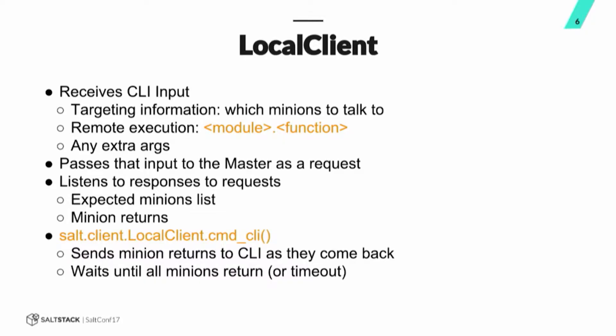There's a concept of an expected minions list. The expected minions list comes back from the master. The master does a little bit of processing to say, here's my best guess of what I think will return. This is useful because we want to have a way for the local client to know when it should be done waiting for returns. The master generates that list by using the information in salt-key — what are the accepted keys that we have — and it also uses some open TCP connections to help inform that list. And then of course it is also waiting for minion returns. This process kicks off in the local client class in the CMD CLI command, where we're sending the minion returns as they come back. It just waits for minions to return or if we hit a timeout.